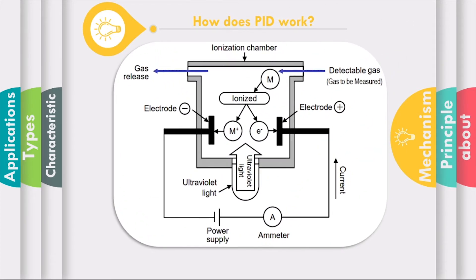To further understand how it works, I'll use this illustration as a guide to help us visualize how its mechanism works. First and foremost, photoionization detector has a sensor that consists of an ionization chamber, an ultraviolet lamp, and a positive and a negative electrode.